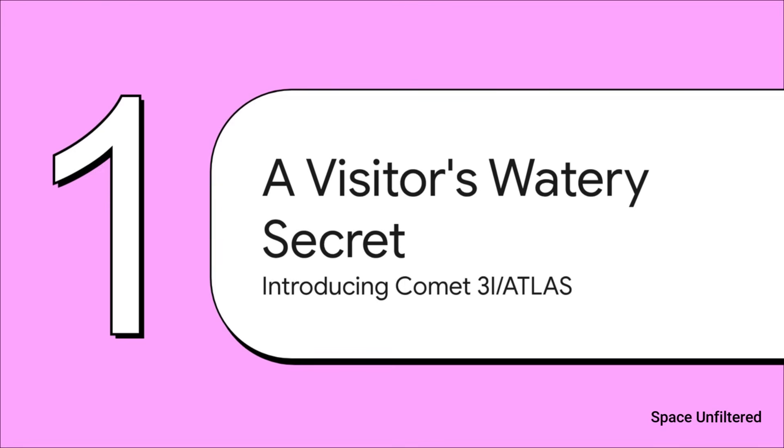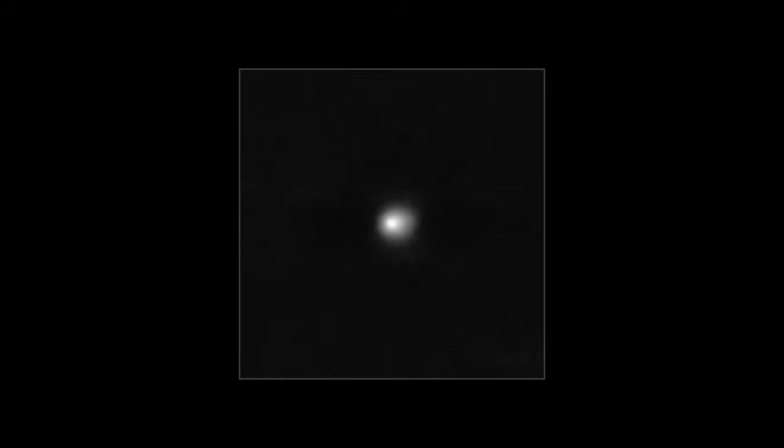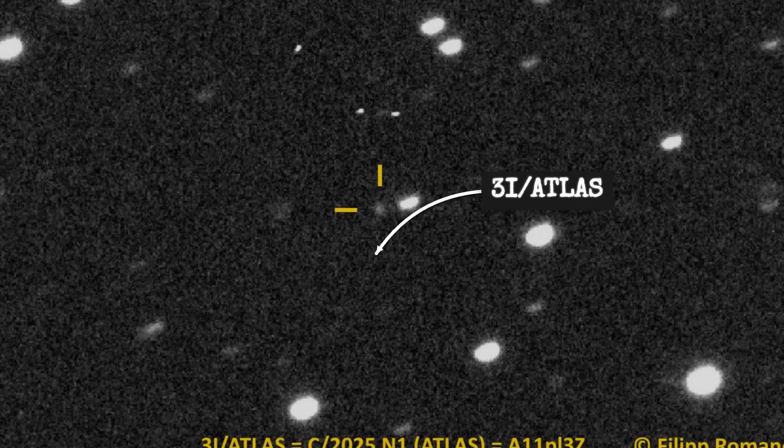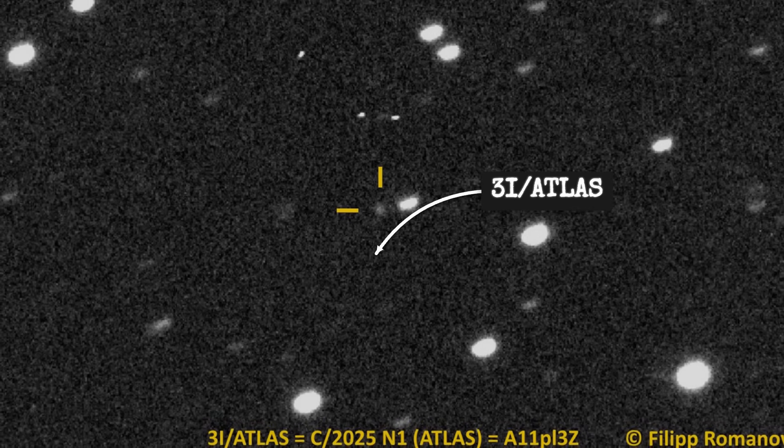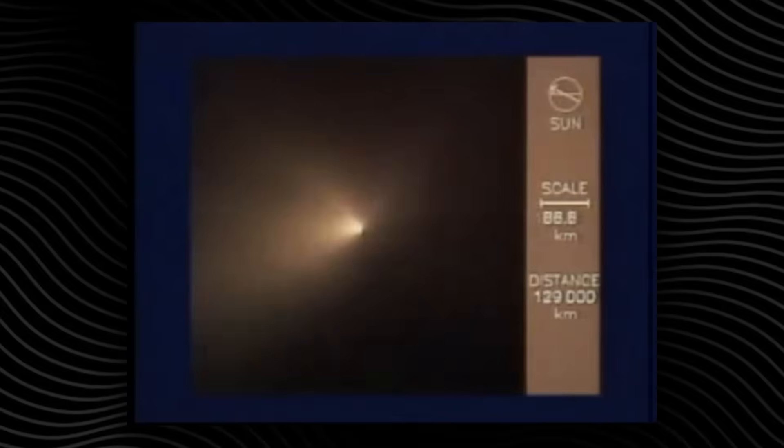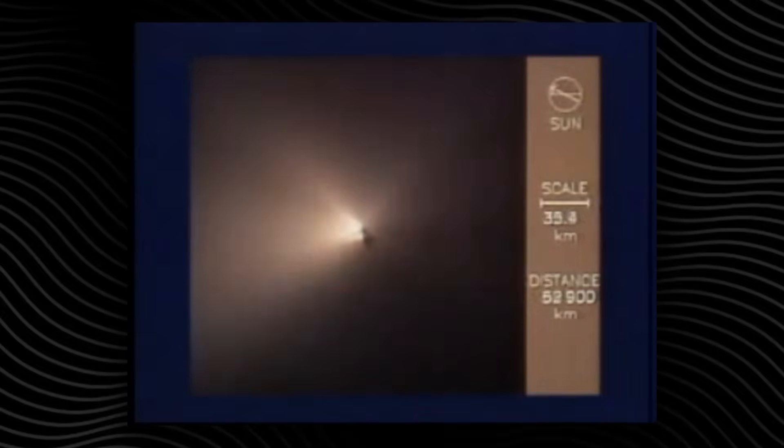All right, let's dive in. Section 1: A Visitor's Watery Secret. Let's properly introduce our subject, Comet 3I/ATLAS. This is only the third known interstellar object we've ever spotted passing through our solar system. That makes each one of these visitors an absolutely priceless messenger carrying clues from the star system where it was born.